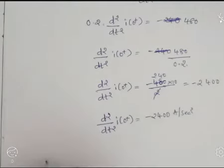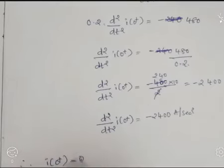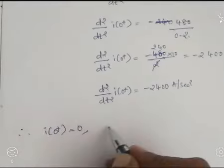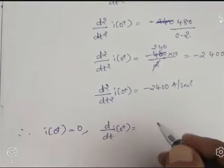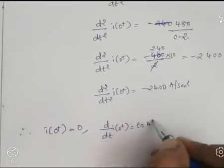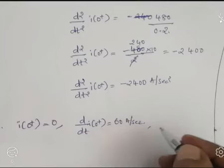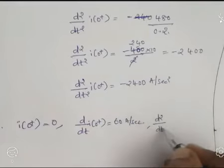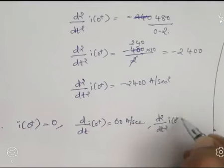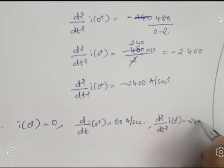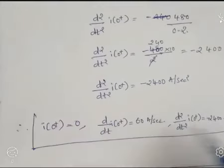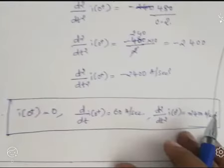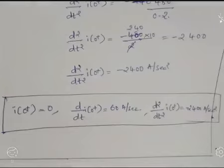Listing all the calculated values: I(0+) = 0 amperes; dI(0+)/dt = 60 amperes per second; d²I(0+)/dt² = minus 2400 amperes per second squared. All three values have been calculated. Similarly, we will take one more example.